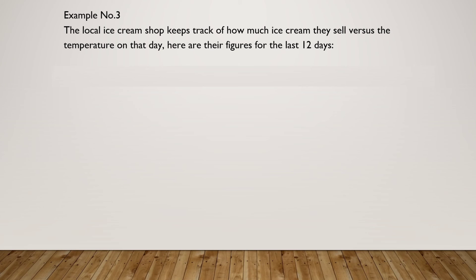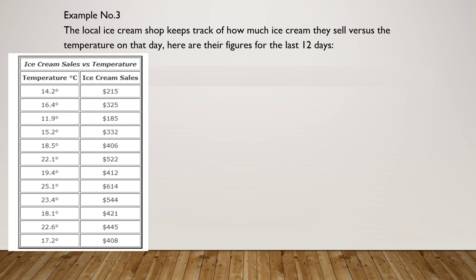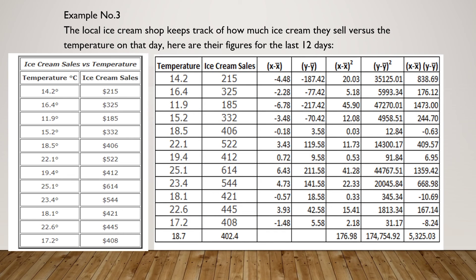Another example: a local ice cream shop keeps track of how much ice cream they sell versus the temperature on that day. Here are the figures for the last 12 days — ice cream sales versus temperature. The first variable is temperature in degrees Celsius and the second variable is ice cream sales in dollars.